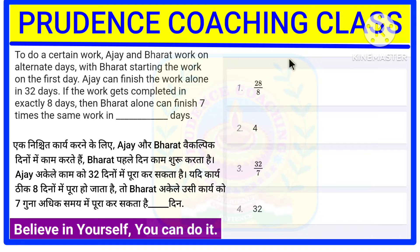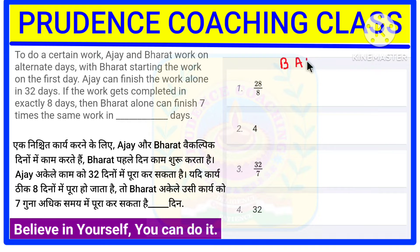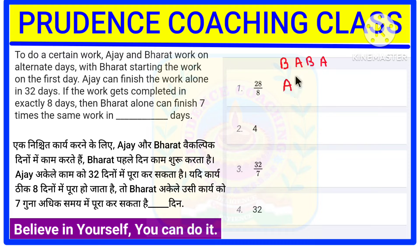Ajay and Varath work on alternate days with Varath starting the work on the first day. So if Varath is coming on the first day, next day Ajay is coming, again Varath, next again Ajay, and like this it is going on. Ajay can finish the work alone in 32 days — that is, if he works alone, he can complete the total work in 32 days.